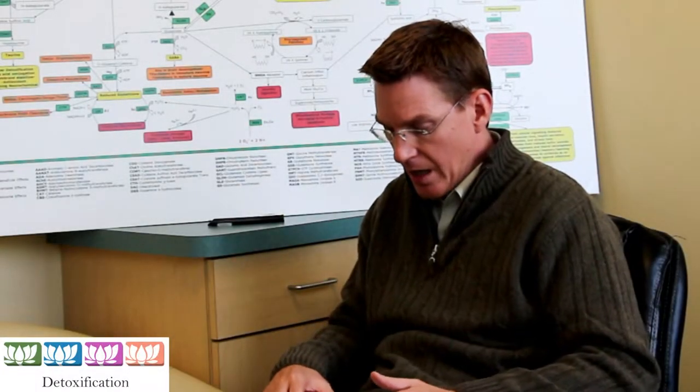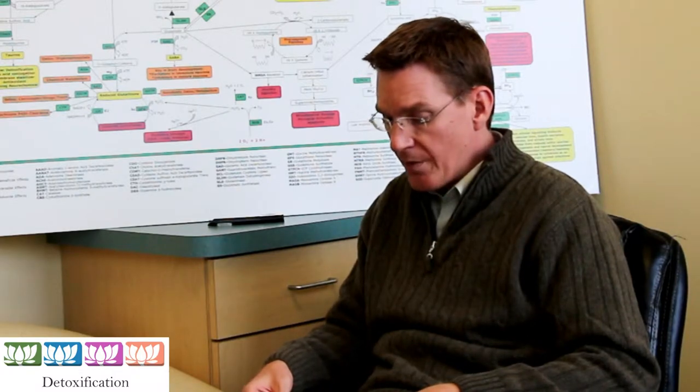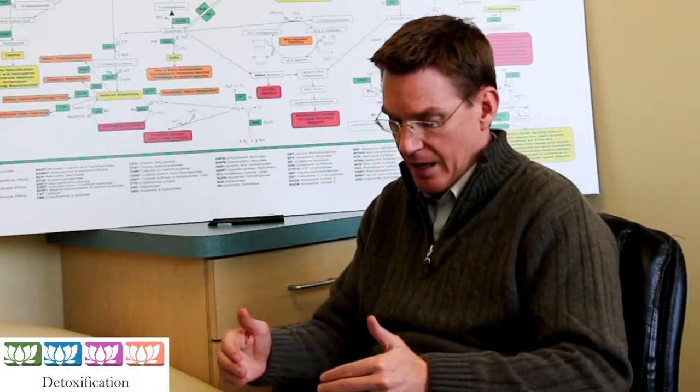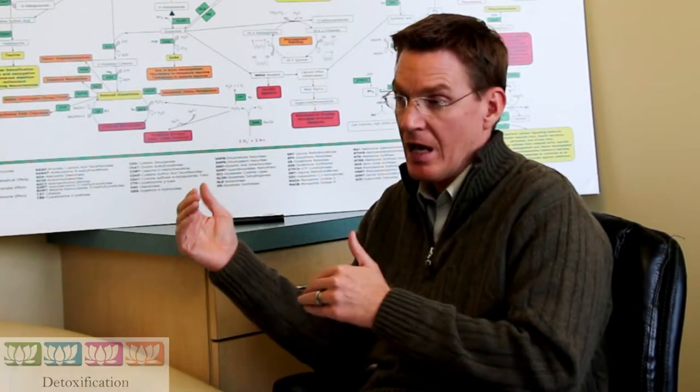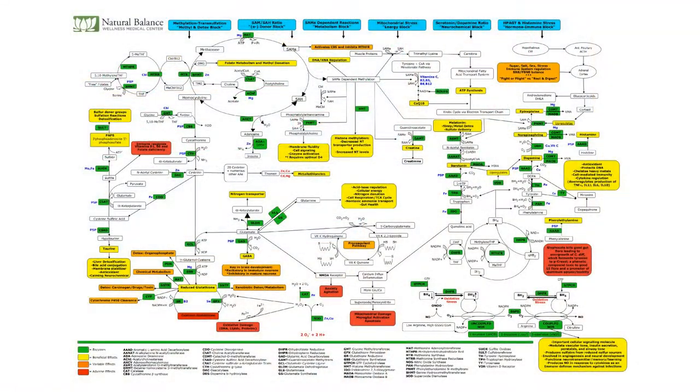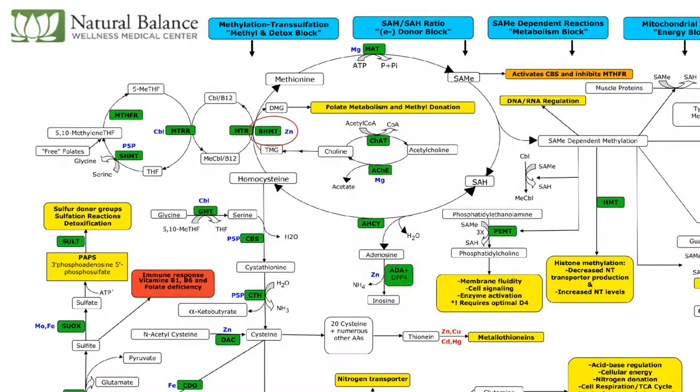Now phase 2 detoxification has some interesting points here, a couple I'll bring out. Some of them are going to be a little redundant. That is to say that some of the SNPs in the phase 2 detoxification pathways also exist within the methylation categories. I just assume talk about them more in the context of methylation. Suffice to say, BHMT, CBS, these all have to do with detoxification, but they also have to do with methylation.